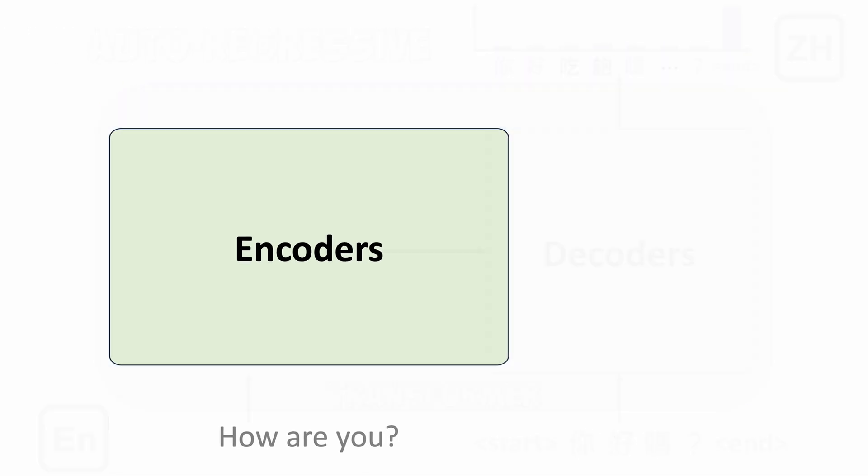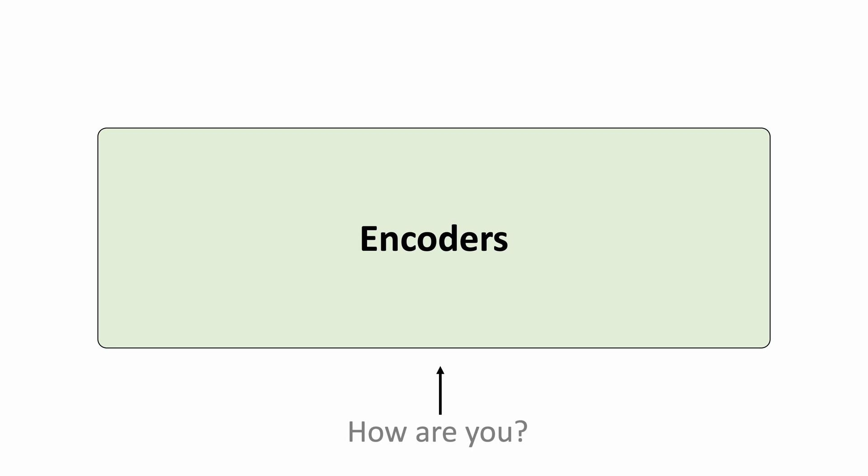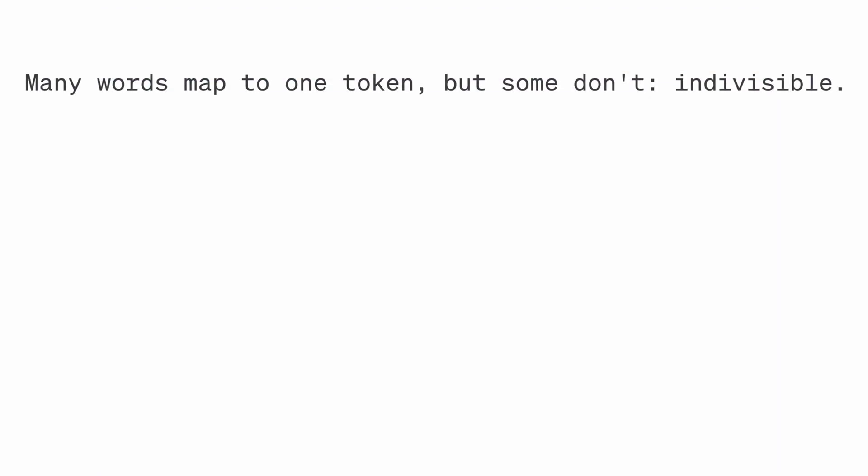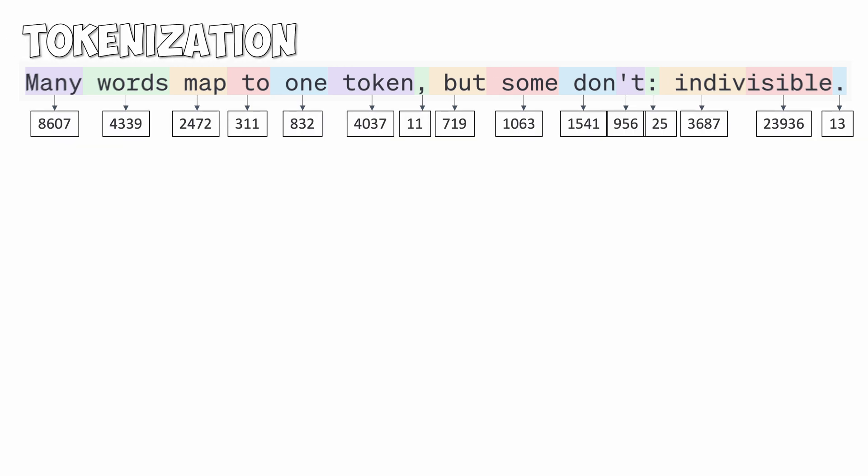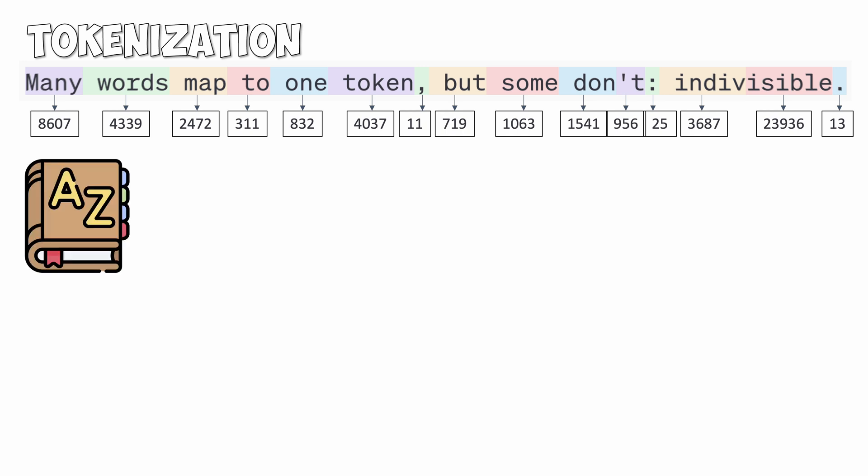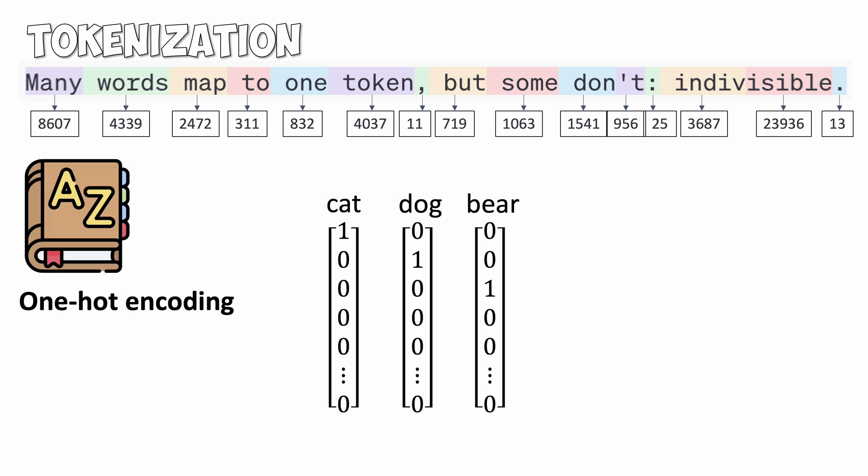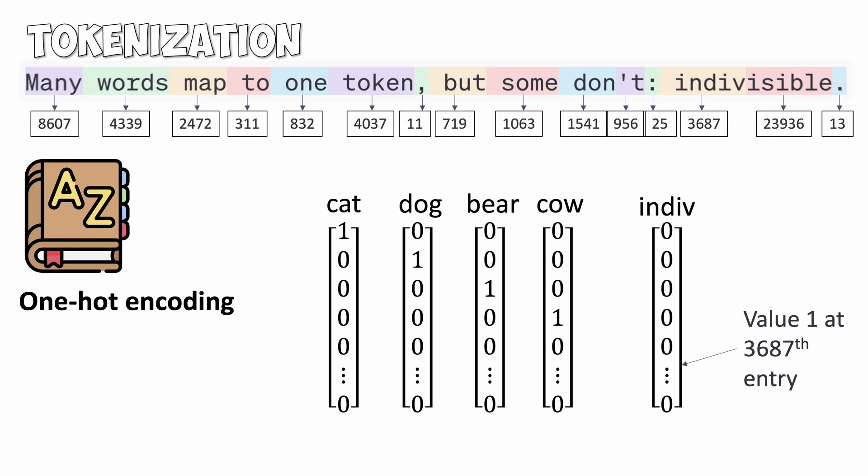Let's first look at how we represent the input text sequence. We break them down into pieces and call them tokens. Each token has a unique ID. This is known as tokenization. A simple way to represent tokens is to use one-hot encoding. We associate each token with a vector of length equal to the number of unique tokens, or vocabulary size.